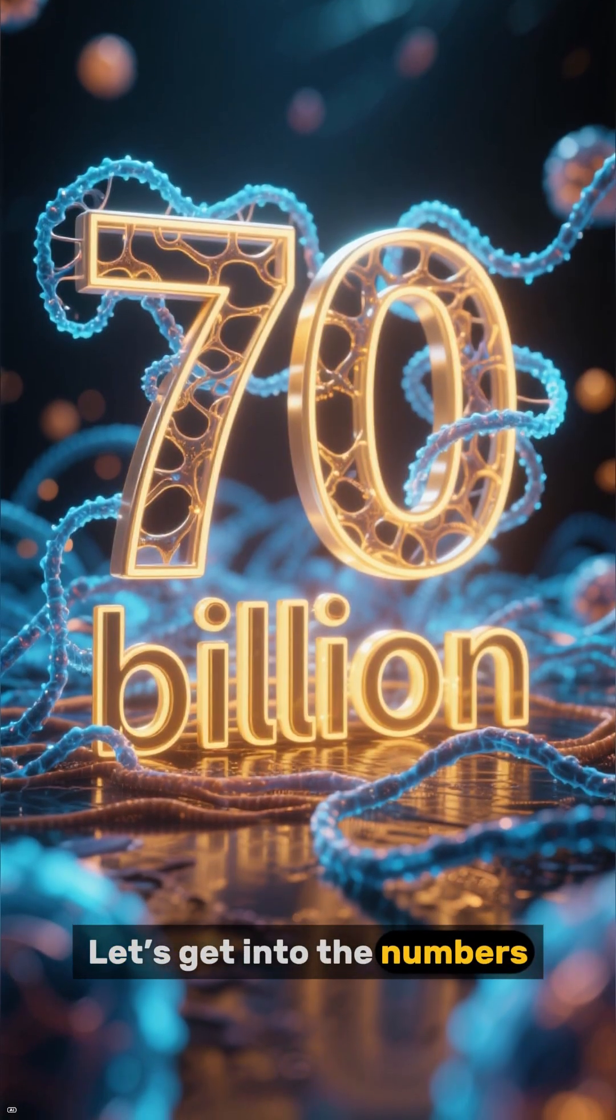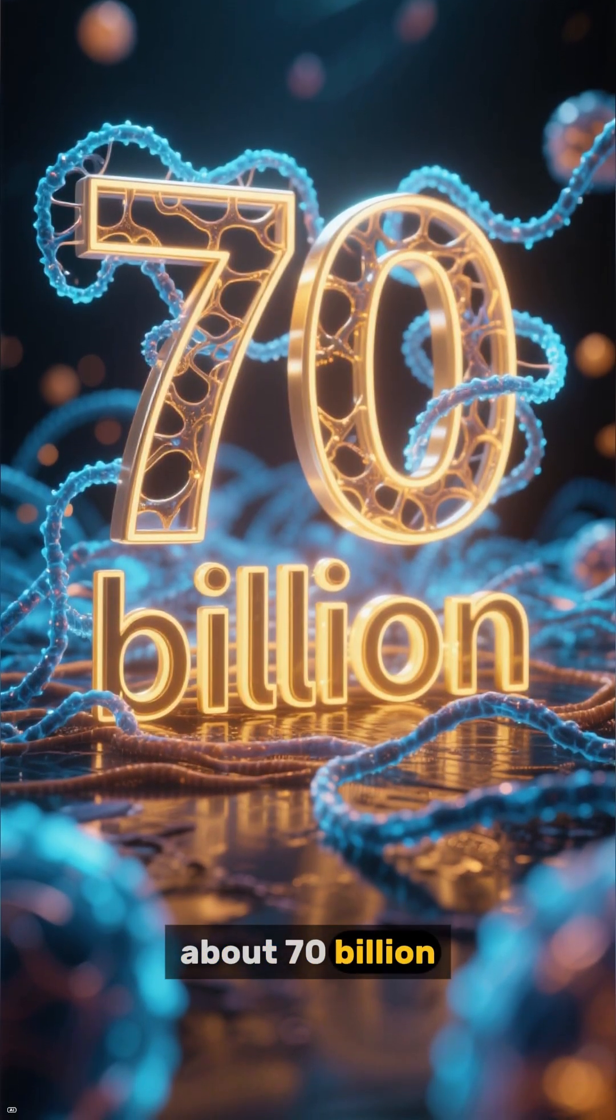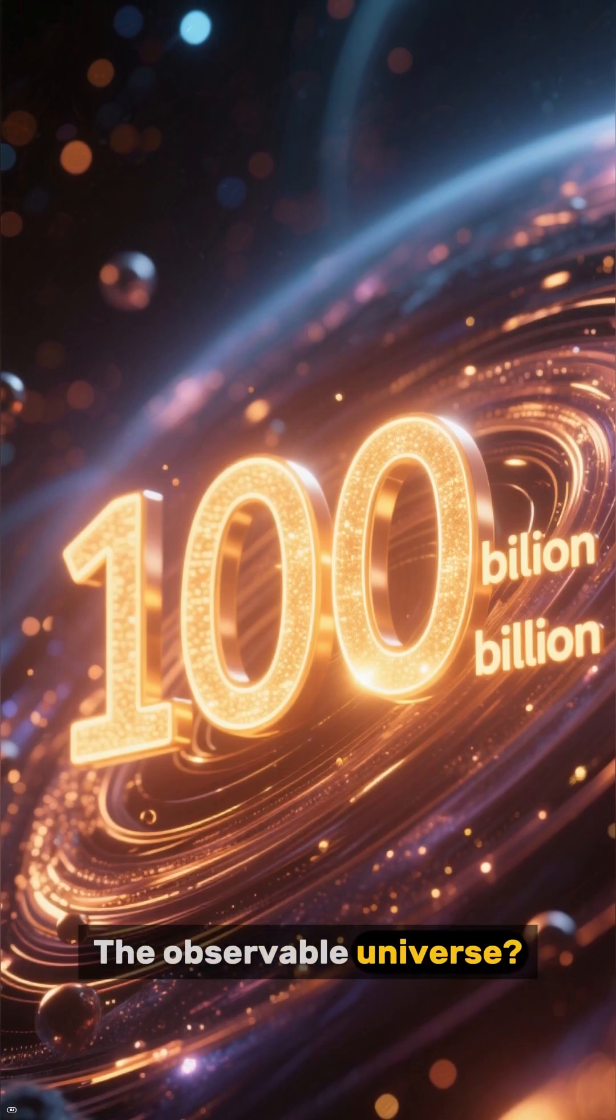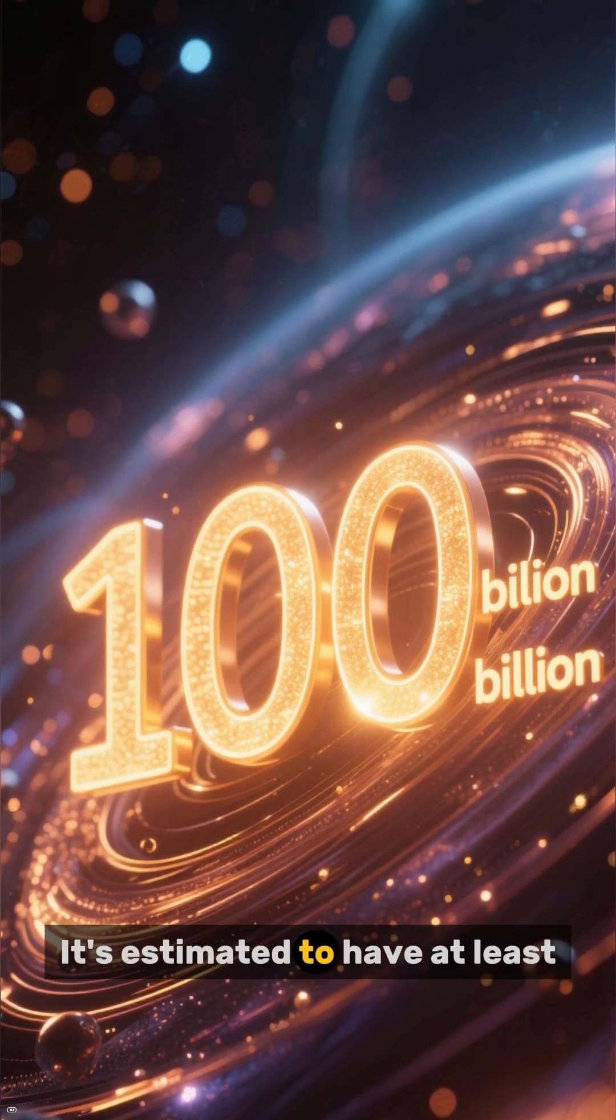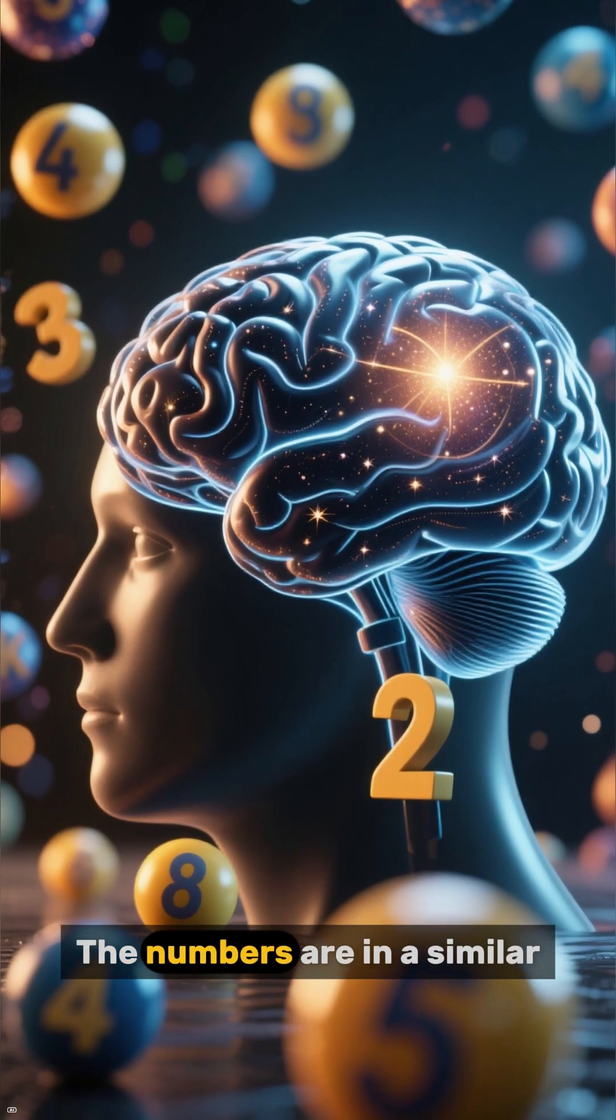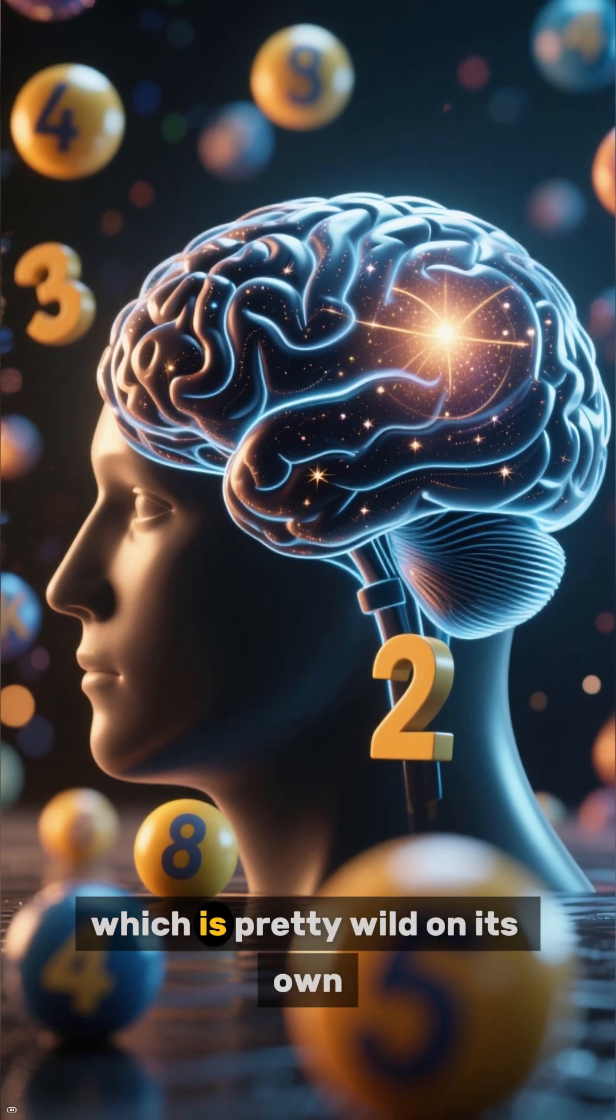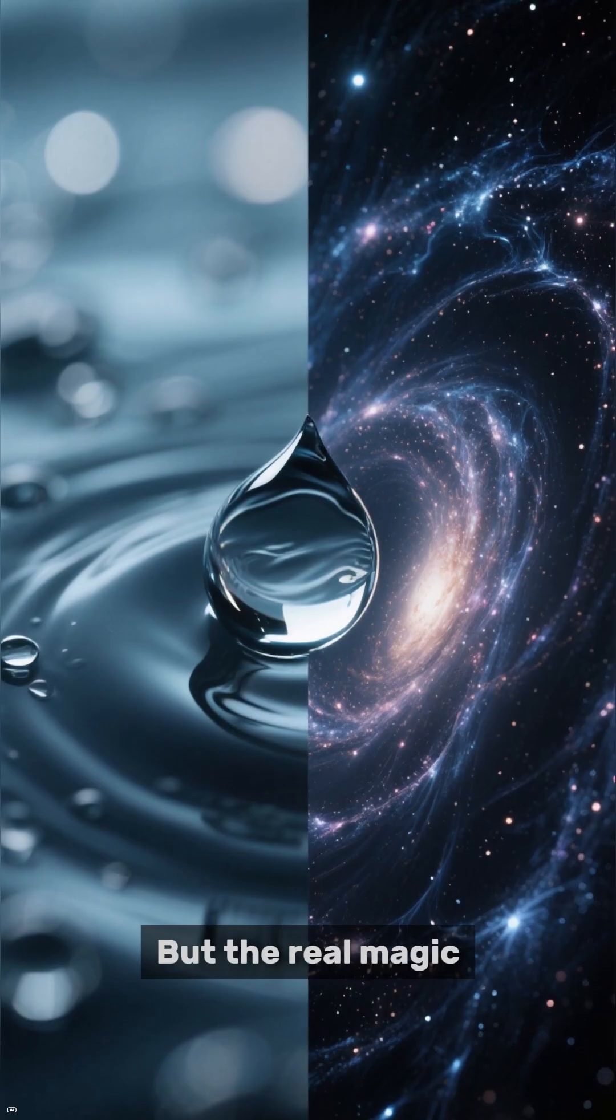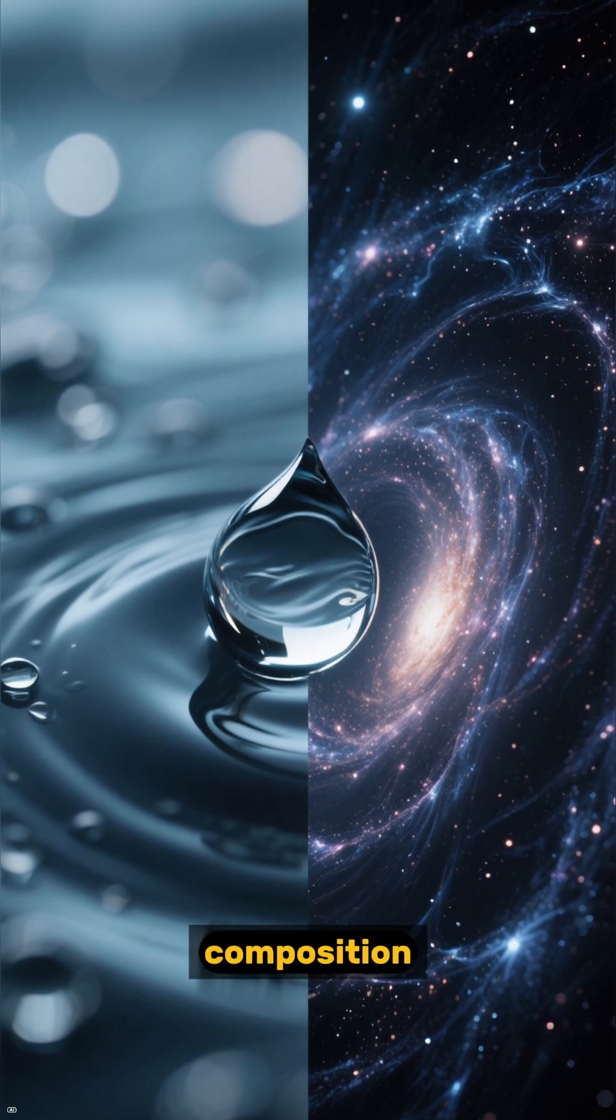Let's get into the numbers. The human brain has about 70 billion neurons. The observable universe, it's estimated to have at least 100 billion galaxies. The numbers are in a similar ballpark, which is pretty wild on its own.